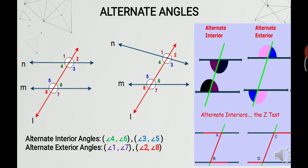Alternate angles are angles which are on either side of the transversal, or on the opposite side of a transversal. Some angles are on the left hand side and some on the right hand side, so they are alternate to each other. Angle 4 and angle 6 are interior angles and on either side of the transversal, so they are called alternate interior angles. Similarly, angle 1 and angle 7 are exterior angles on either side of the transversal, so they are called alternate exterior angles. You can find the other pairs similarly, and the diagrams on the right hand side of the slide give a better understanding of the topic.